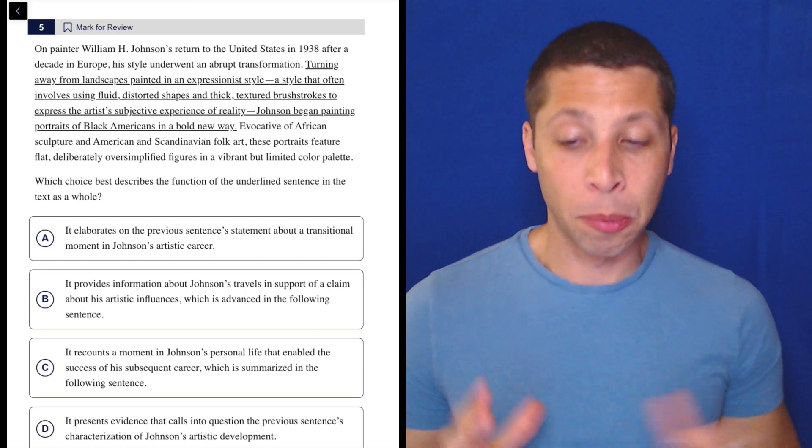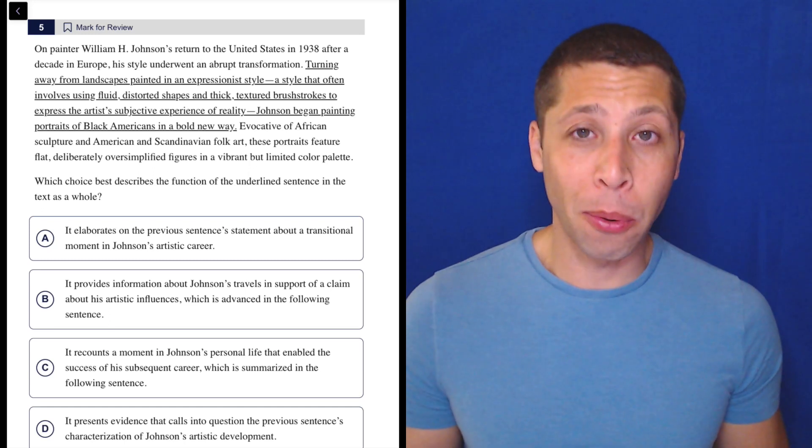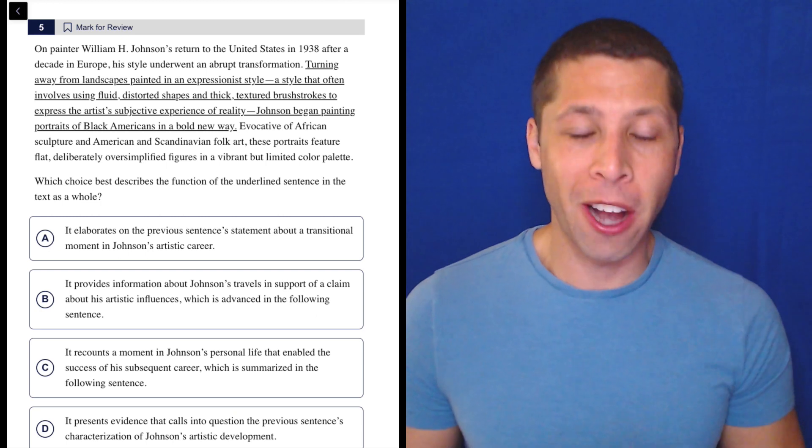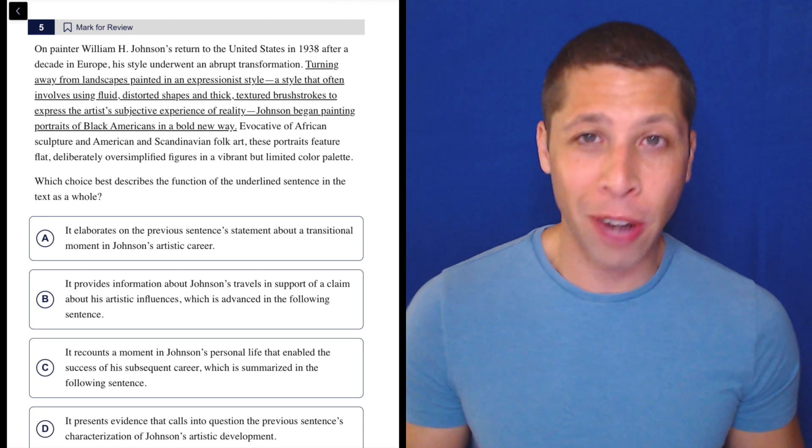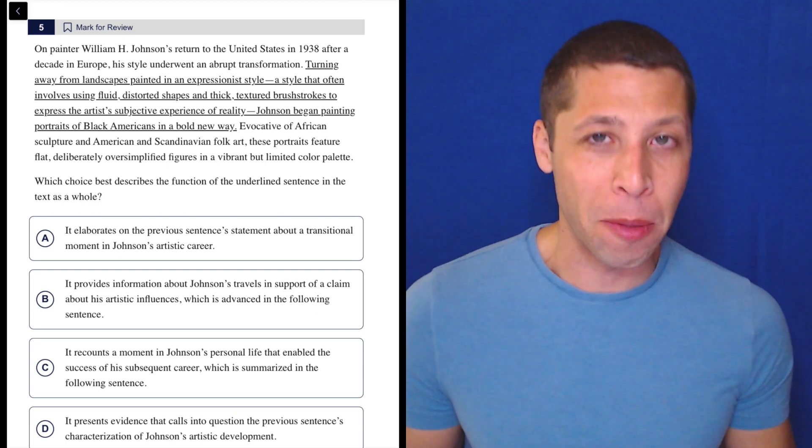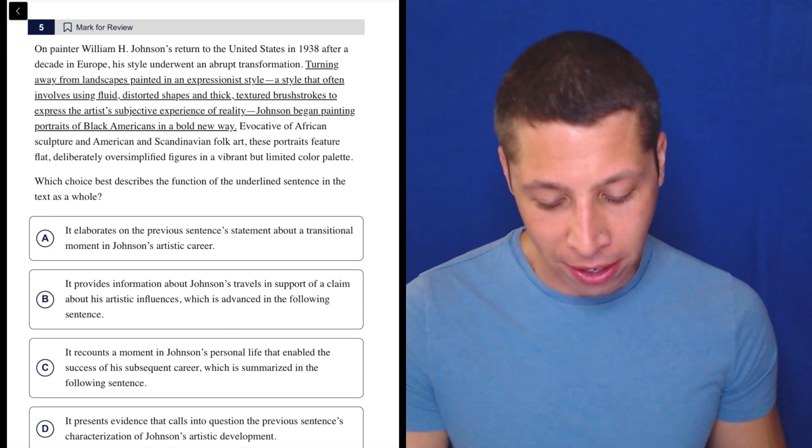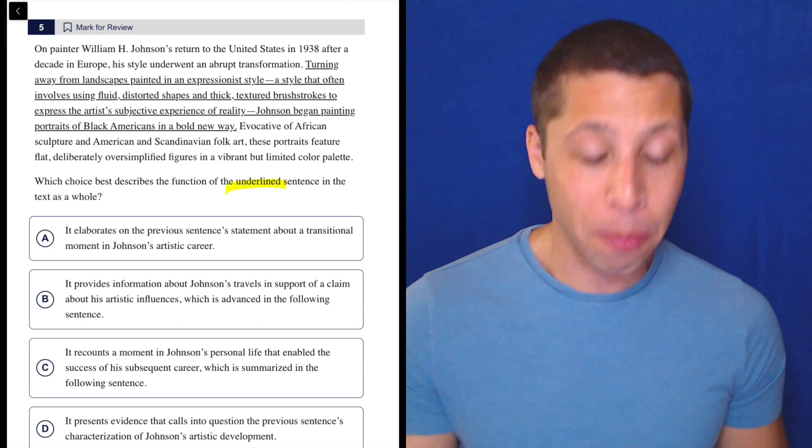Whenever the question is about a specific part of a passage, an underlined portion, make sure you are focusing on that portion. It's really important because the traps are going to be about the other parts of the passage. So let's just take a look at how they do that here. Which describes the underlined portion, let's go.